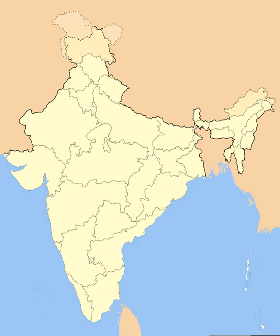Mysore State was reorganized with the addition of districts of Bellary and South Canara (excluding Kasaragod Taluk) and the Kollegal Taluk of Coimbatore district from Madras State, the districts of Belgaum, Bijapur, North Canara, and Dharwad from Bombay State, the Kannada-majority districts of Bidar, Raichur, and Gulbarga from Hyderabad State, and the province of Coorg. The Laccadive Islands, which were divided between South Canara and Malabar districts of Madras State, were united and organized into the union territory of Lakshadweep. Bombay State was enlarged by the addition of Saurashtra State and Kutch State, the Marathi-speaking districts of Nagpur division of Madhya Pradesh, and the Marathwada region of Hyderabad State. Rajasthan and Punjab gained territories from Ajmer and Patiala and East Punjab States Union respectively, and certain territories of Bihar were transferred to West Bengal.